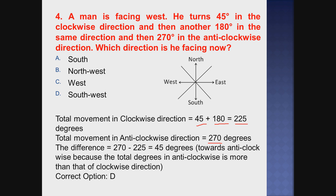So now total movement of clockwise and anticlockwise - find the difference between the two. From anticlockwise to clockwise: 270 minus 225 equals 45 degrees. So the net movement is 45 degrees in the anticlockwise direction.